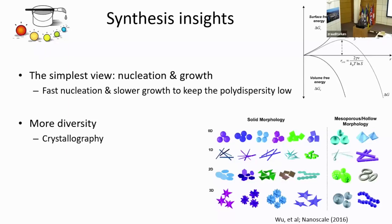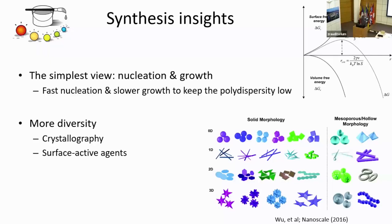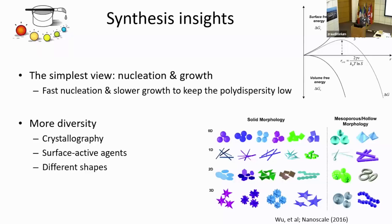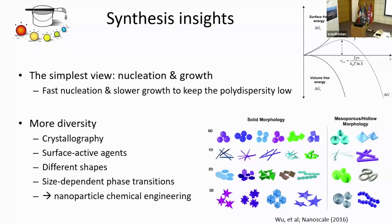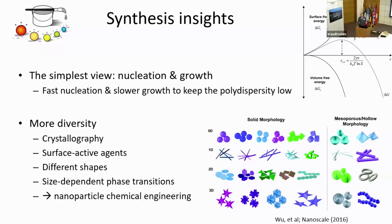Crystallography can play a role and particles are not necessarily spherical — they can have different forms: cubes, truncated cubes, etc. You can also play with surface-active agents which can affect the shape very much; for example, gold can grow in the form of rods even though the underlying crystallographic symmetry is cubic. You can even have size-dependent phase transitions, where the smallest particles start in one phase but undergo a transition as they grow — this complicates the whole process.